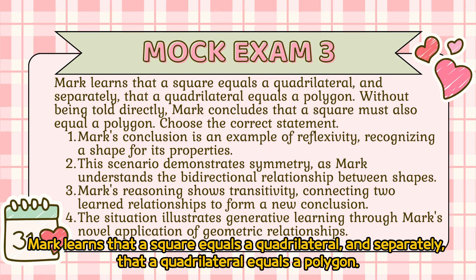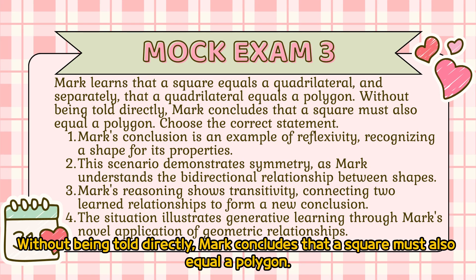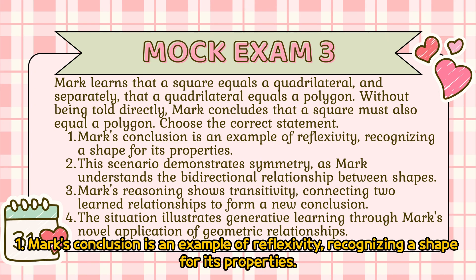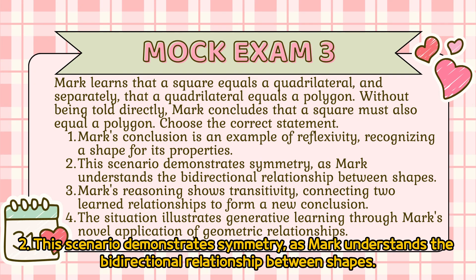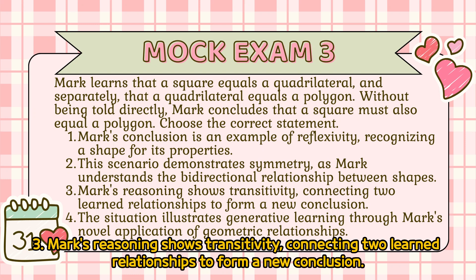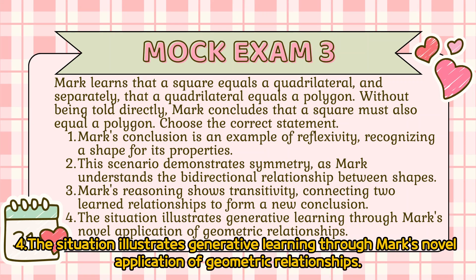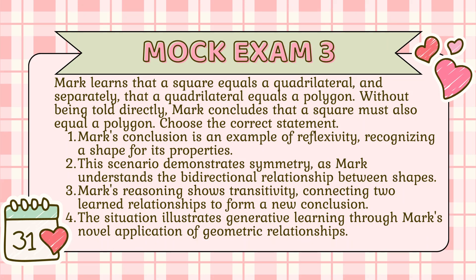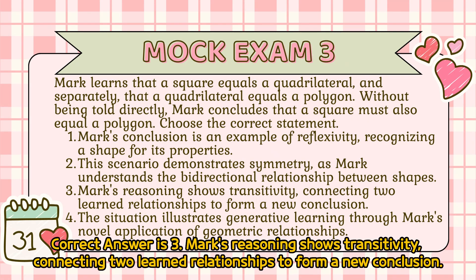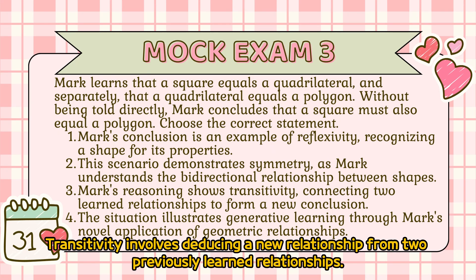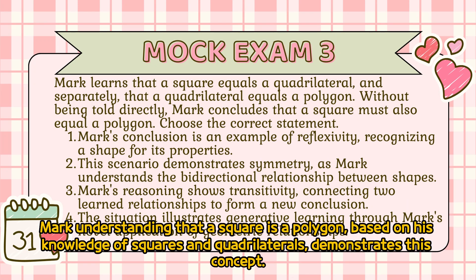Mock exam 3: Mark learns that a square equals a quadrilateral, and separately, that a quadrilateral equals a polygon. Without being told directly, Mark concludes that a square must also equal a polygon. The correct answer is 3 — Mark's reasoning shows transitivity, connecting two learned relationships to form a new conclusion. Transitivity involves deducing a new relationship from two previously learned relationships. Mark understanding that a square is a polygon, based on his knowledge of squares and quadrilaterals, demonstrates this concept.